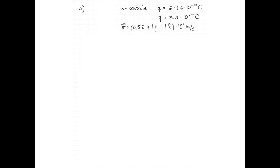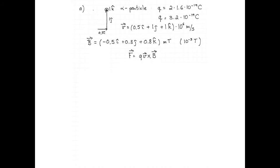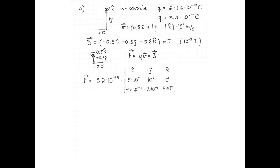And briefly describe the trajectory of the alpha particle in the magnetic field. An alpha particle has a charge of 2 multiplied by 1.6 times 10 to the negative 19, so 3.2 times 10 to the negative 19 Coulombs. The velocity vector, 0.5 i-hat plus 1 j-hat plus 1 k-hat times 10 to the negative 6 meters per second, can be pictured as moving right, moving up, and moving out of the page simultaneously. For the magnetic field, negative 0.5 i-hat plus 0.3 j-hat plus 0.8 k-hat times 10 to the negative 3 Tesla, picture a field pointing left, up, and out of the page simultaneously.